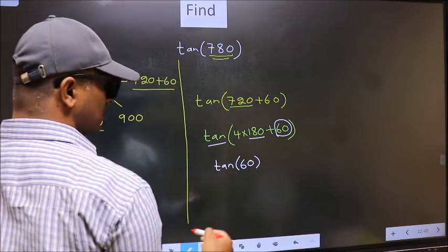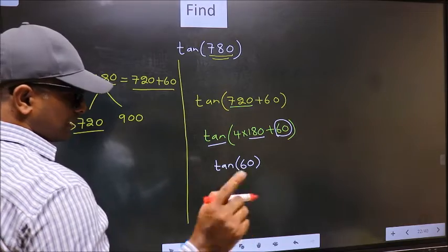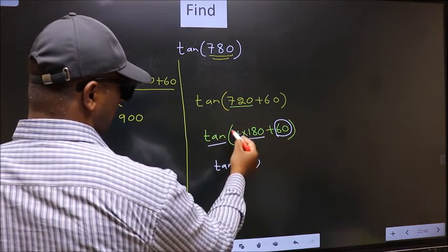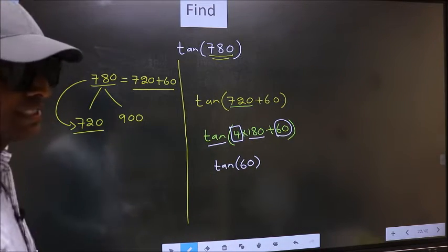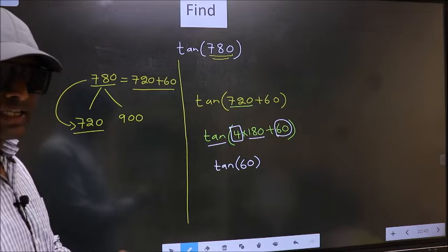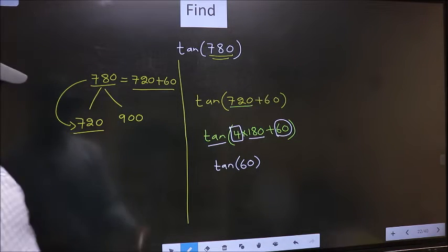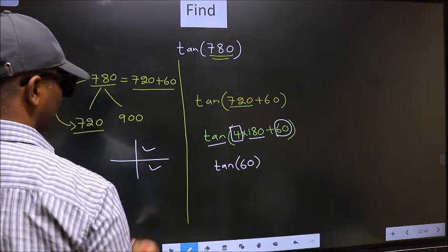Now, the question is, will we get here plus or minus? To answer that, we should look at the number before 180. That is 4. And 4 is even. And all the even multiples of 180, they lie in either the first or the fourth quadrant.